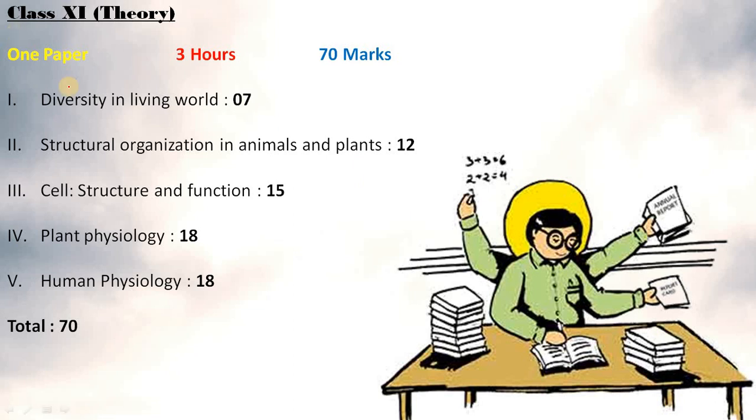It is one paper consisting of 70 marks and 3 hours. Unit 1 Diversity in the Living World is of 7 marks. Unit 2 Structural Organization in Animals and Plants is of 12 marks. Cell Structure and Function is of 15 marks. Unit 4 Plant Physiology consists of 18 marks and Unit 5 Human Physiology consists of 18 marks. Sum total is 70 marks.